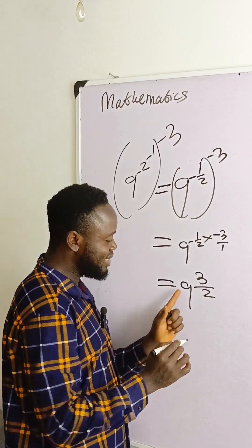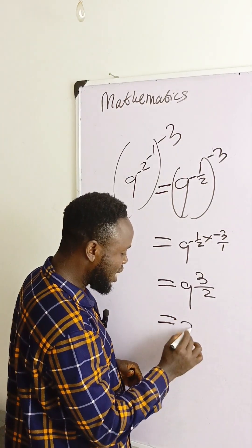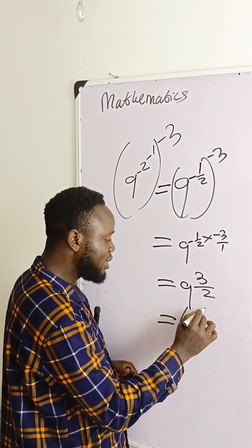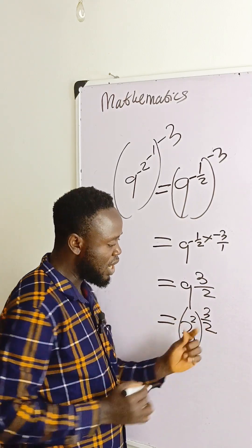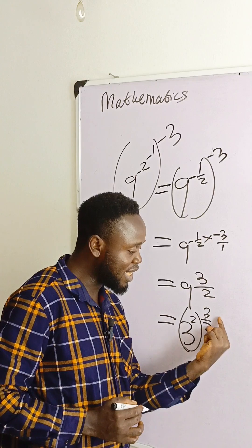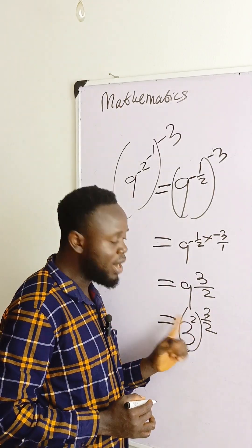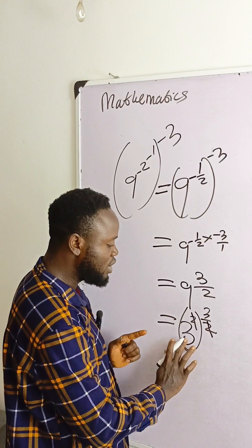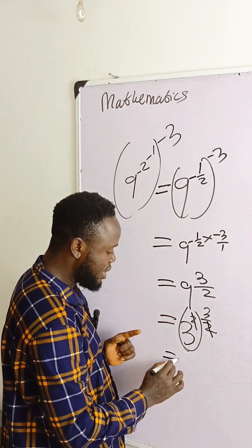And you know that 9 is 3 raised to power 2, so I'll write 3 raised to power 2, then raised to power 3 over 2. Another bracket outside, another exponent outside bracket, one inside the bracket, so this 2 divides this 2, we have 1, and the only thing we are left with now is 3 raised to power 3.